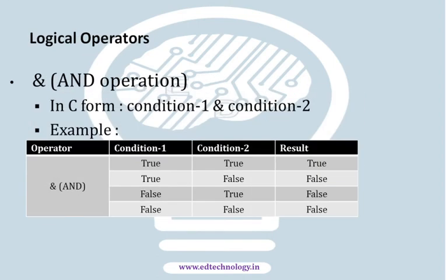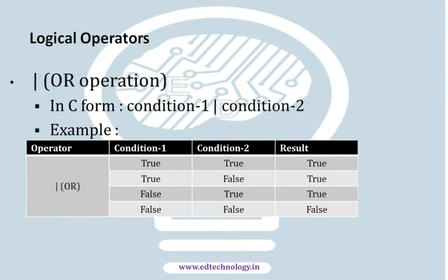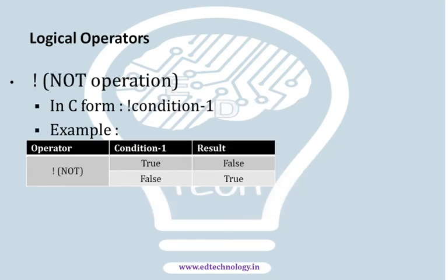The next set of operators is used for logical operations. We have logical operators where AND is used to join or combine two conditions and compare. Then we have the OR operation symbolized by a straight line, used to compare either-or conditions. There is a table representing the logical operations which are also part of digital circuits. Similarly we have the NOT operation as well.